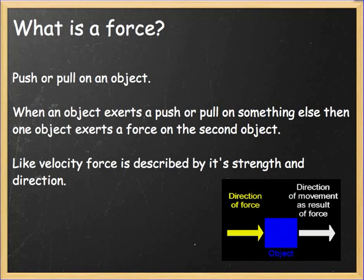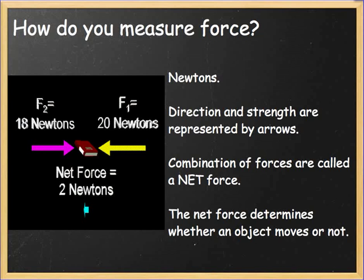Just like velocity, force is described by not only its strength, but also its direction. That picture in the bottom right-hand corner where the yellow arrow is pointing towards the object is going to cause that blue box to move the same direction as that yellow arrow. You measure force in newtons — Sir Isaac Newton. Direction and strength are represented by arrows. The combination of forces is called a net force, and the net force determines whether an object moves or not. Force 1 is acting with 20 newtons towards the book, and Force 2 is operating with 18 newtons, so the book is going to move with 2 newtons of force towards Force 2 because Force 1 is greater.